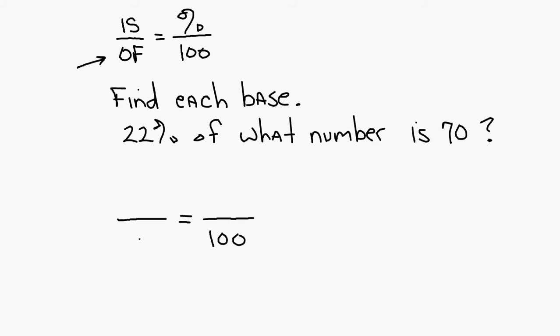We need to identify the is. 22% of what number is 70? Is 70. 70 is your is. You're trying to find the of, so that's your variable. Obviously, your percent is 22. So your proportion is set.